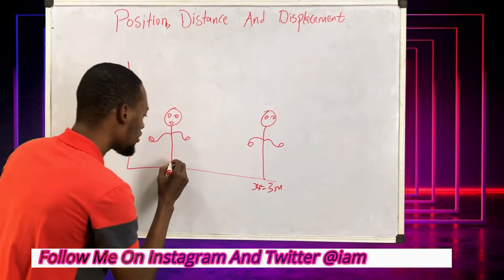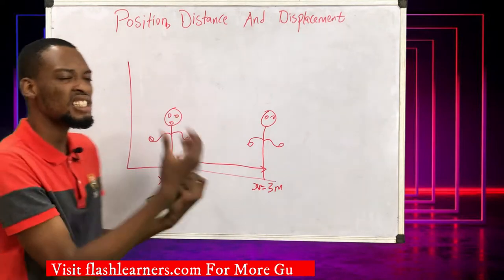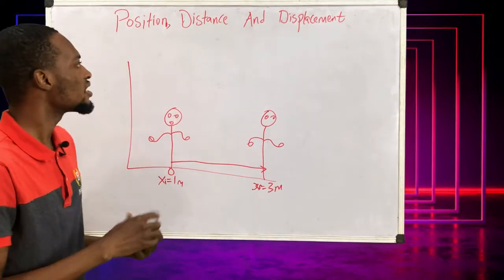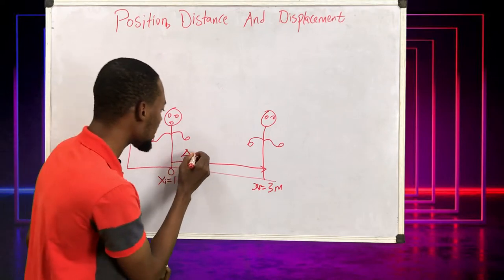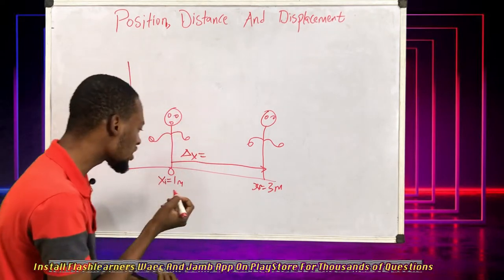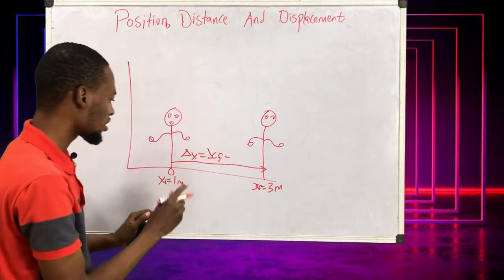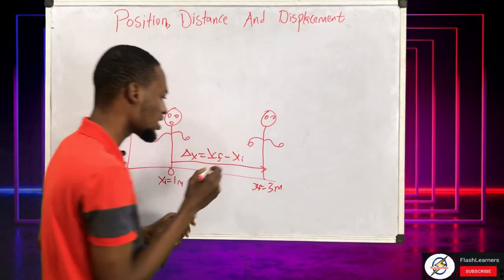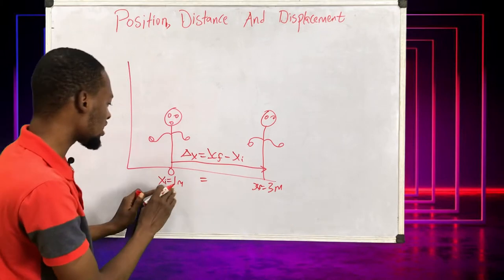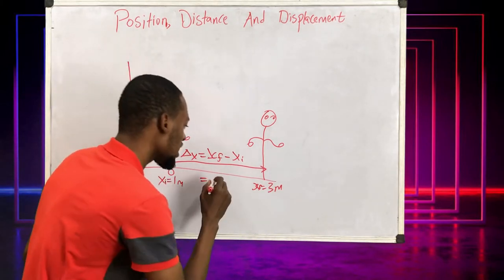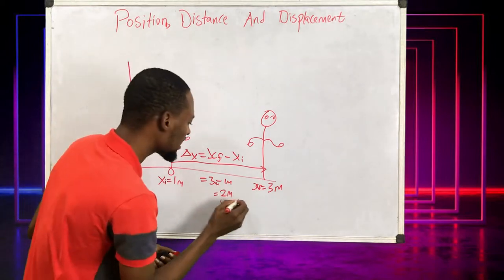So here my position is one meter, and here my position is three meters — meaning I've moved from here to here. Displacement is simply change in position. Change in s equals sf minus si. So three meters minus one meter equals two meters. That is my displacement.